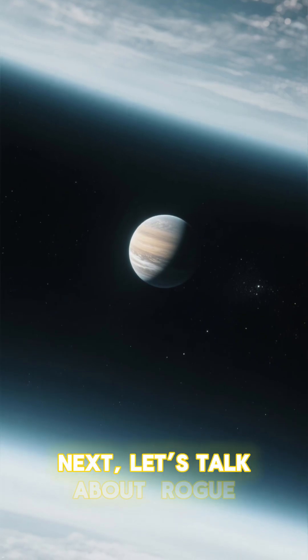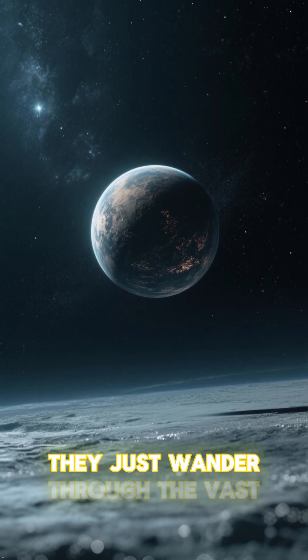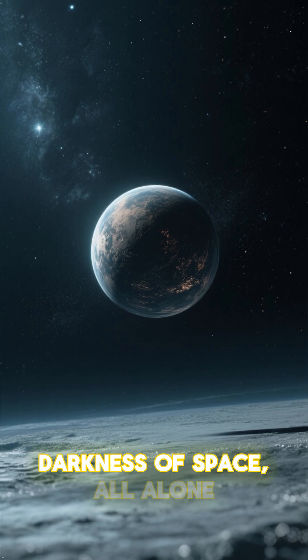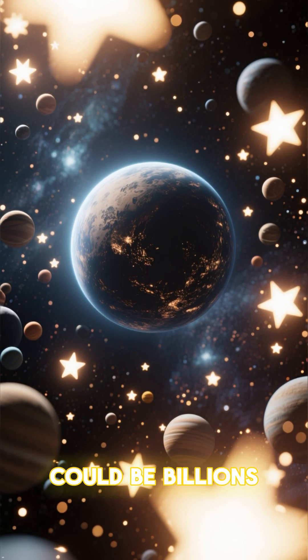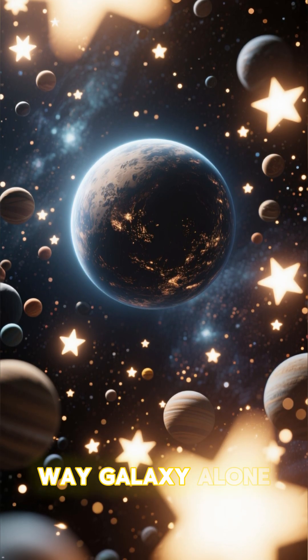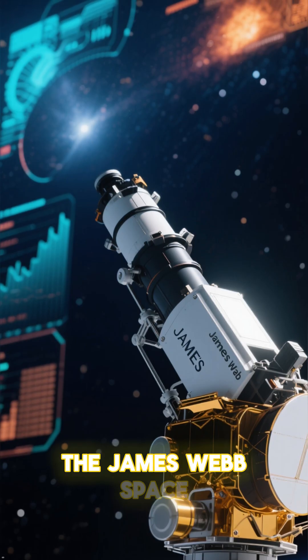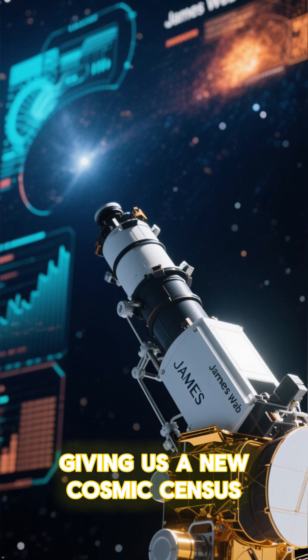Next, let's talk about rogue planets. These are planets that don't orbit a star. They just wander through the vast darkness of space, all alone. Recent estimates suggest there could be billions, maybe even trillions, of these lonely worlds in our Milky Way galaxy alone. The James Webb Space Telescope is now powerful enough to spot them, giving us a new cosmic census.